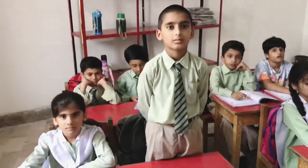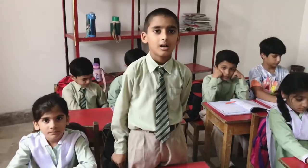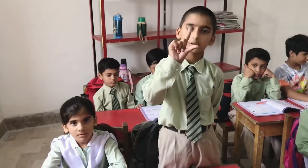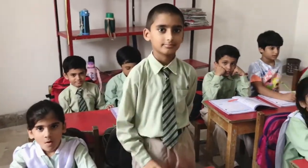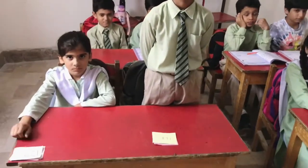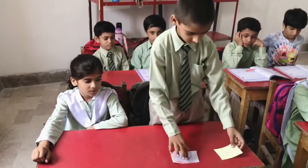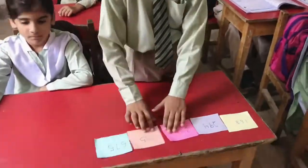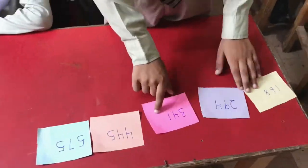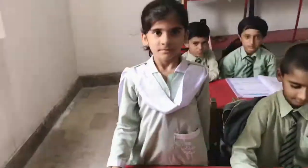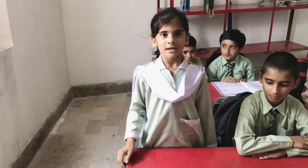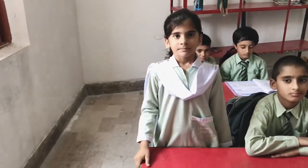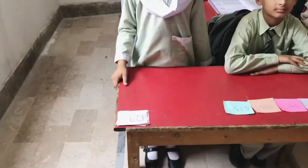Muslim, what is ascending order? Ascending is small, small, and greatest. Okay, pick up the cards and start arranging. The ascending order is from greatest to smallest. Now pick up the cards.